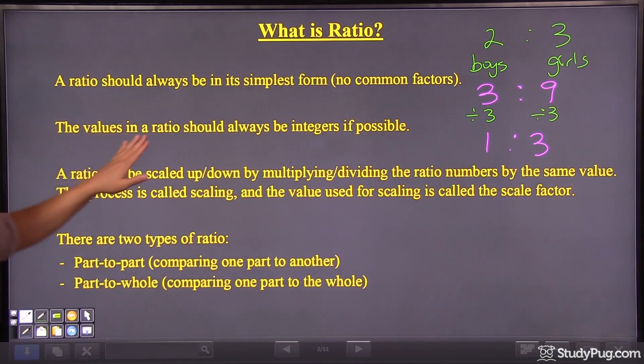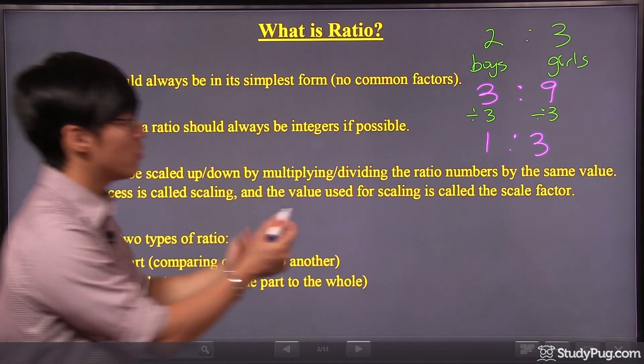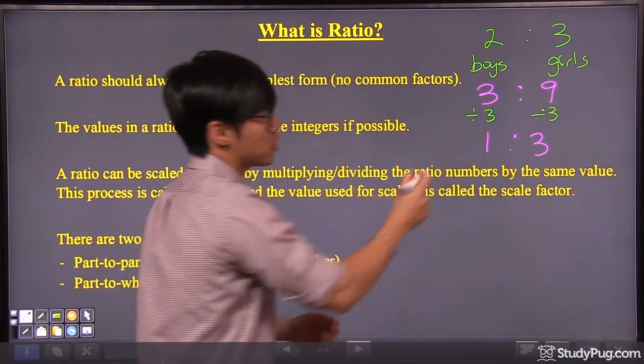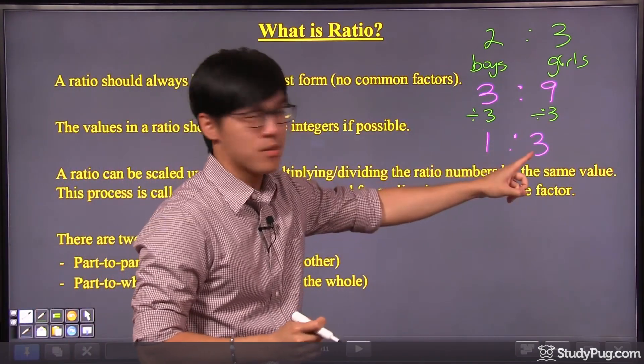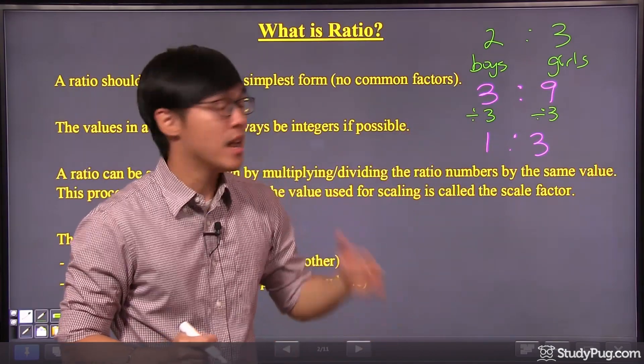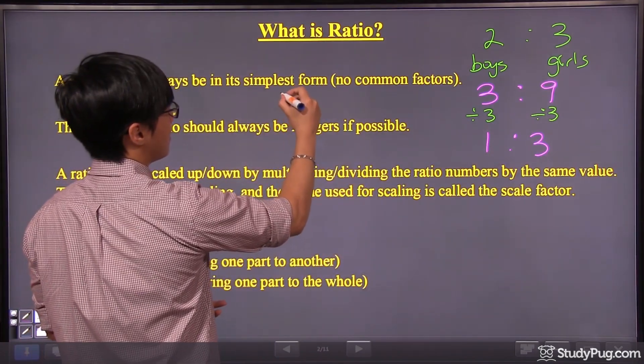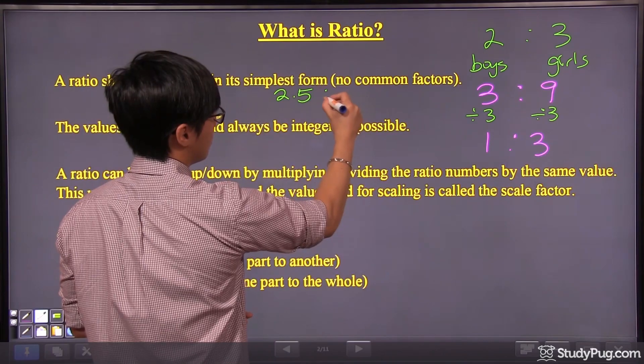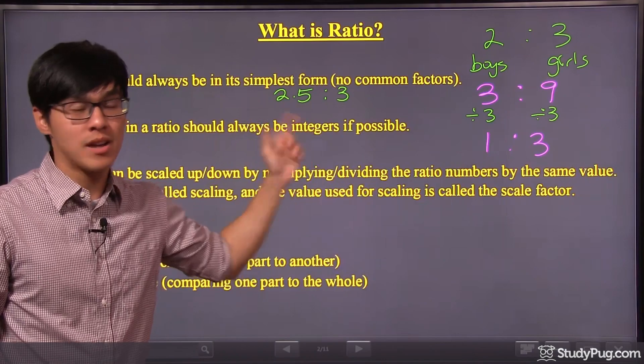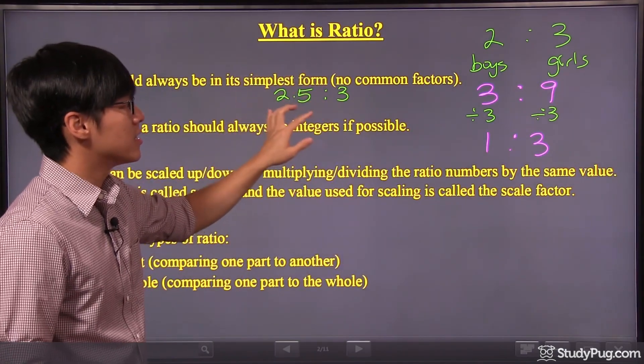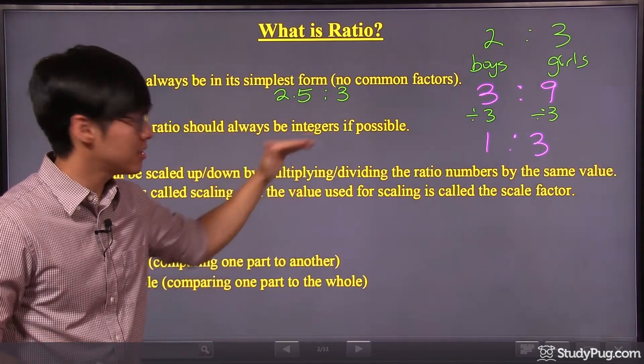Next, the values in the ratio should always be integers if that is possible. That means integers, like a whole number. Now, three and nine or one and three, they are all integers. However, again, there might be times when you come across ratios like this. We have, let's say, 2.5 to 3. 2.5 is not an integer, it's a decimal number. So we somehow have to convert this back into an integer. As for how, let's take a look at the next one.